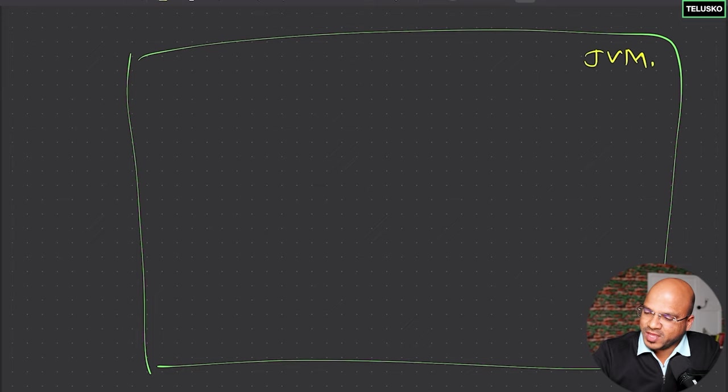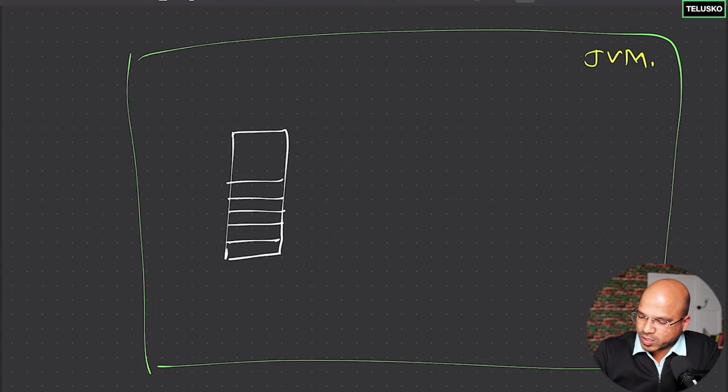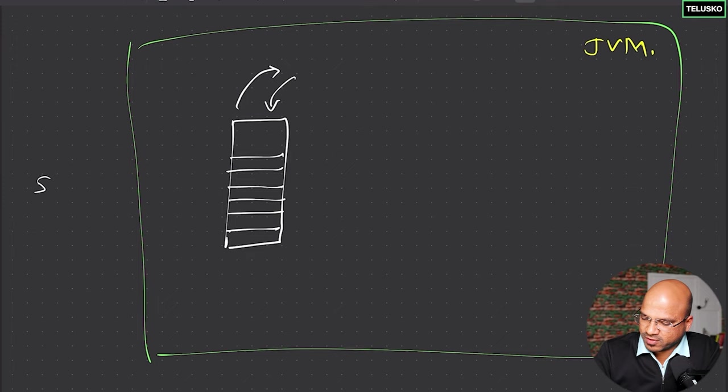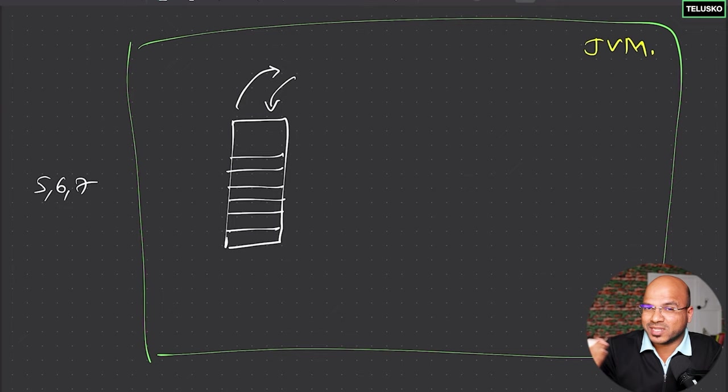JVM memory can be categorized into two parts. The first is an area where you can store data and it has a feature called last in first out. For example, if you send data five, six, seven, the first value entered was five, second six, third seven. When you retrieve, you get seven first because that is last in first out. This is called stack — so basically you have a memory called stack memory.